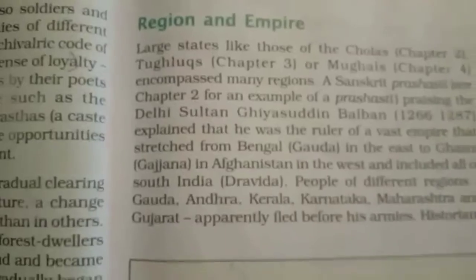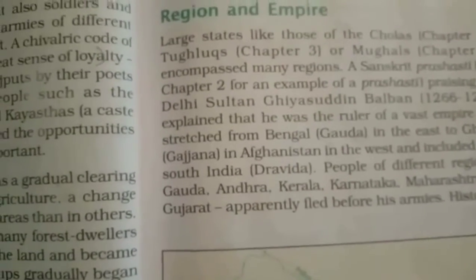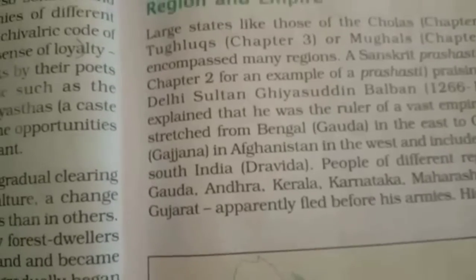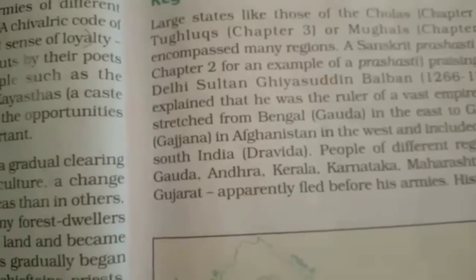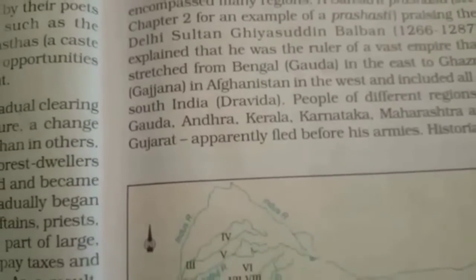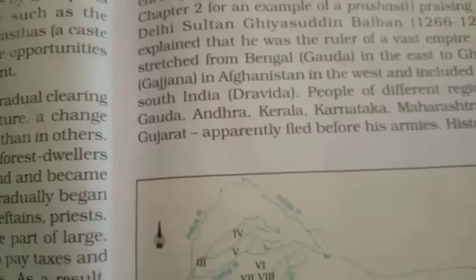Jatis framed their own rules and regulations to manage the conduct of their members. Large states like the Cholas, Tughlaqs and Mughals encompassed many regions. These great dynasties had very large empires — for example, one ruler's empire stretched from Afghanistan to Bengal and across the entire South India.